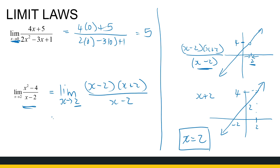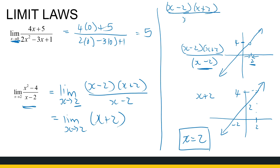So the limit as x approaches 2 of (x−2)(x+2)/(x−2) behaves the same as the limit as x approaches 2 of x+2. Note that these two functions are not equal — they're equal everywhere except at x=2 — but their limits as x approaches 2 are the same. Now I've got the limit as x approaches 2 of x+2, and I can substitute in to get 4. The key takeaway: we can substitute the value in as long as it doesn't make the denominator 0 — here it did, so we had more work to do first.